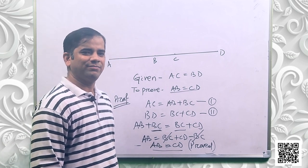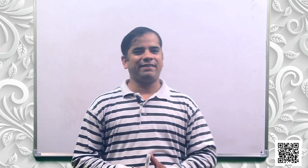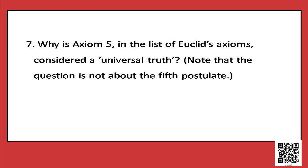Hope you understood. Students, let us discuss question number 7. It says, why is axiom 5 in the list of Euclid's axioms considered a universal truth? Axiom 5 says that the whole is always greater than a part. Let us draw a diagram and discuss it.